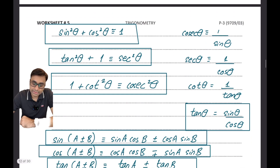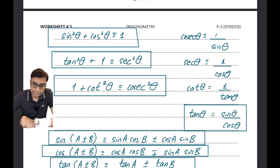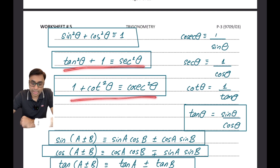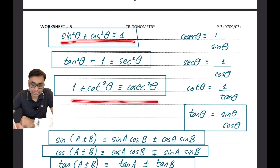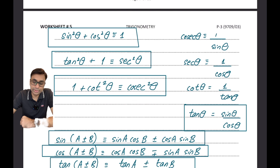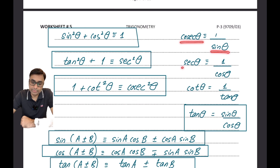Here is the list of identities you will be required to use. The ones highlighted in boxes are given to you in the formula sheet. First, sin²θ + cos²θ ≡ 1 — you've been using this in AS math. Dividing by sin²θ gives another identity; dividing by cos²θ gives yet another. Cosec θ is the reciprocal of sin θ; sec θ is 1/cos θ; and cot θ is 1/tan θ.